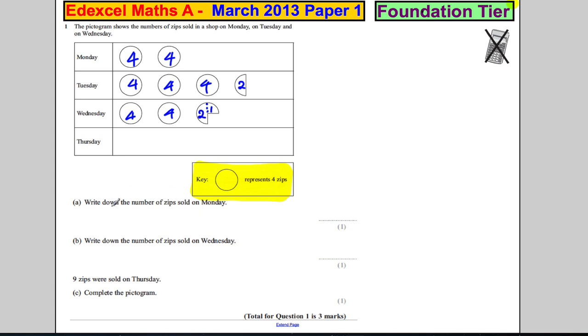Okay, so write down the number of zips sold on Monday. Well, that's four, add four, four plus four, and that's going to be equal to eight.